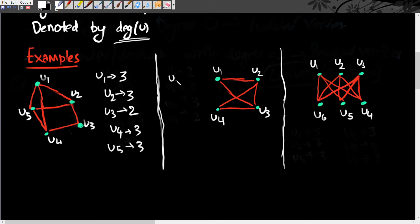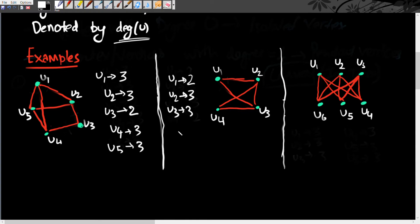In the second example, there are four vertices u1, u2, u3, u4, with all edges marked in red. For u1, there are two edges incident on it so its degree is two. For u2, degree is three; for u3, degree is three; and for u4, degree is two.